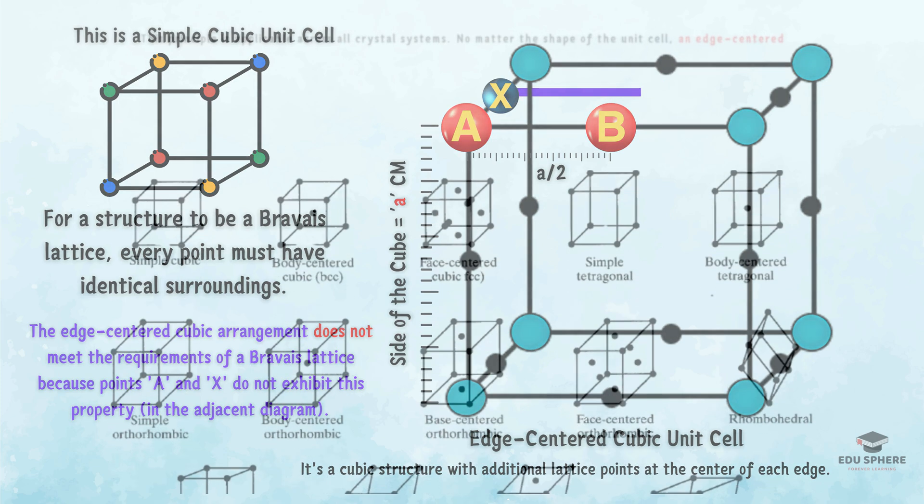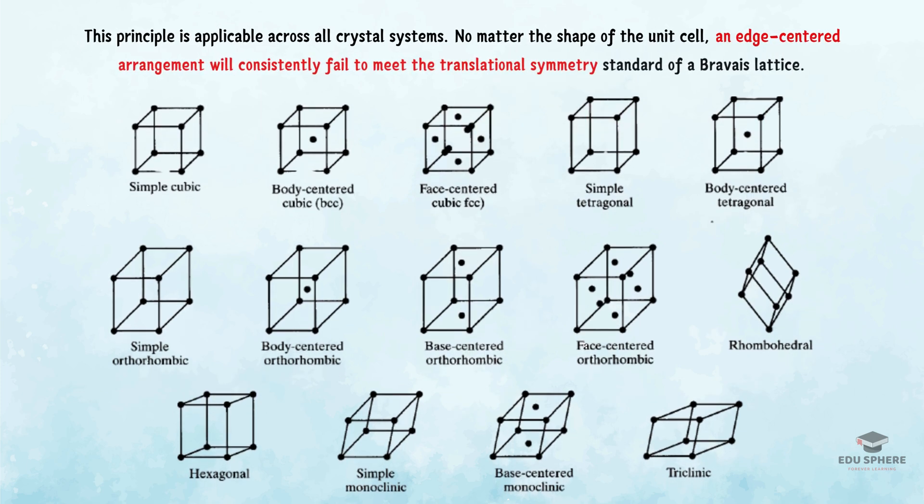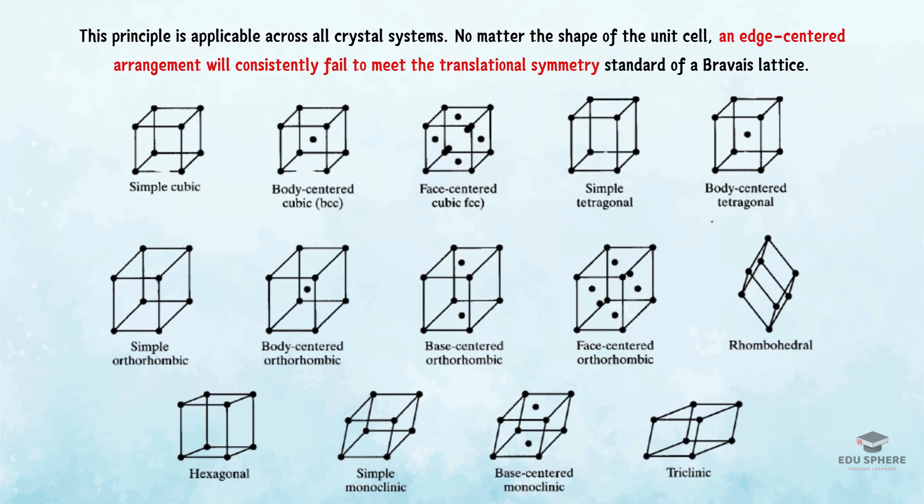It's crucial to note that this limitation isn't exclusive to cubic structures. This principle holds true for all crystal systems. An edge-centered arrangement, whether it's in a cubic, tetragonal, or hexagonal unit cell, will always violate the translational symmetry of a Bravais lattice.